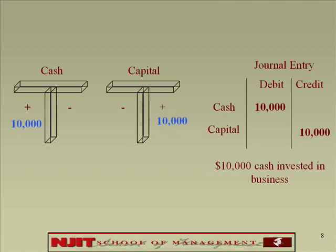Now you know how to enter T accounts, put the signs, record the transactions, and make a journal entry. Let's do it for each of the transactions. Transaction two: the travel agency paid $4,000 cash for April office rent. Cash is minus, and you created an expense — rent expense — which is plus.